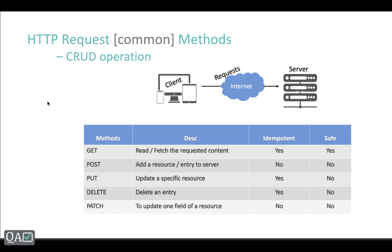In practical scenarios, for GET requests you basically don't need any special permissions. But for POST, DELETE, PATCH, or PUT you will need admin access or some special permissions to perform those operations, because these are not safe methods. That's pretty much the overview of the commonly used methods. There are actually many more methods, but from a QA perspective, these five methods are the ones you will encounter most frequently.